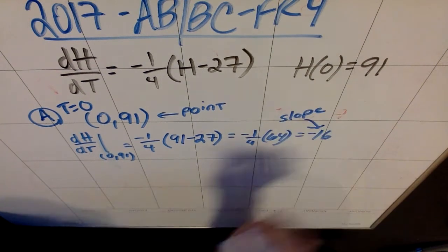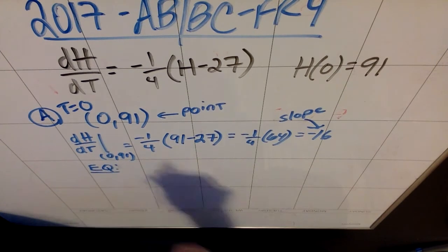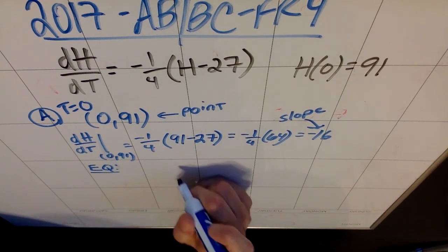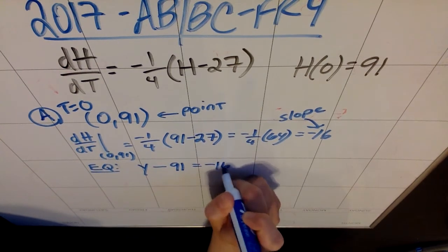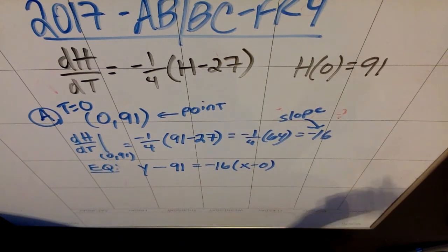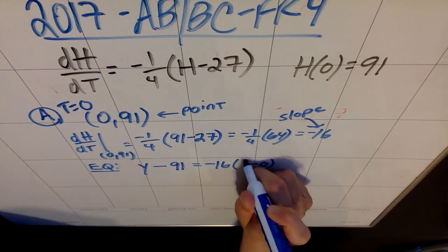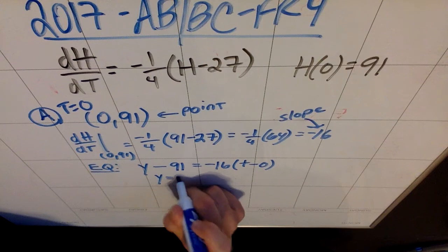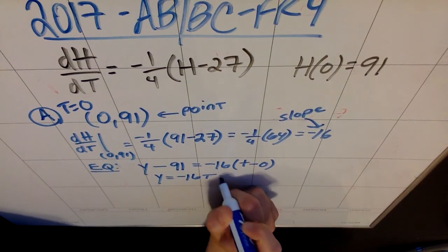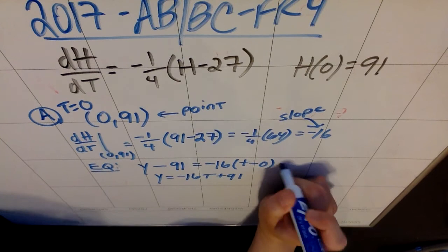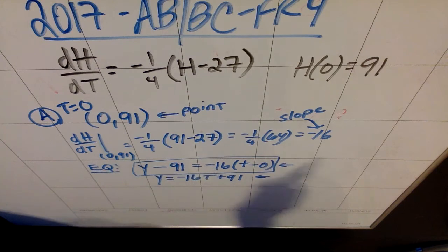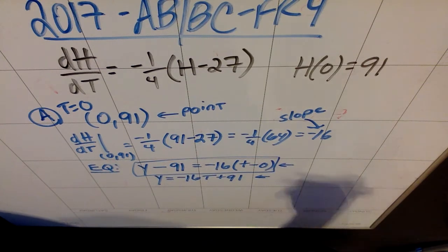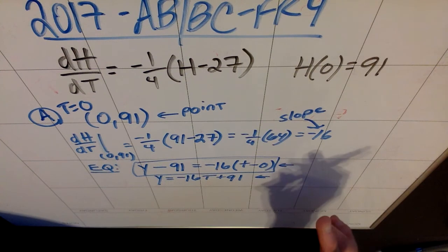Once I have a point and a slope, I can write my equation. My equation is Y minus 91 equals M, negative 16, times X minus 0. There's my equation of my tangent line. Except I shouldn't be using X's, I should be using T's, because the independent variable is T. So my tangent line is negative 16T plus 91, or you can leave it like this. Either of them are fine.